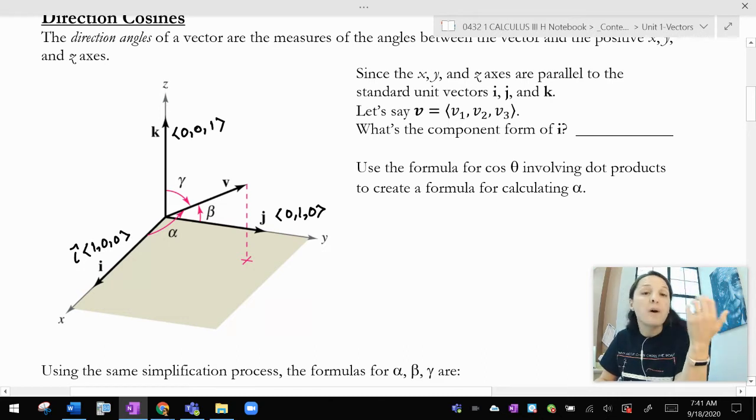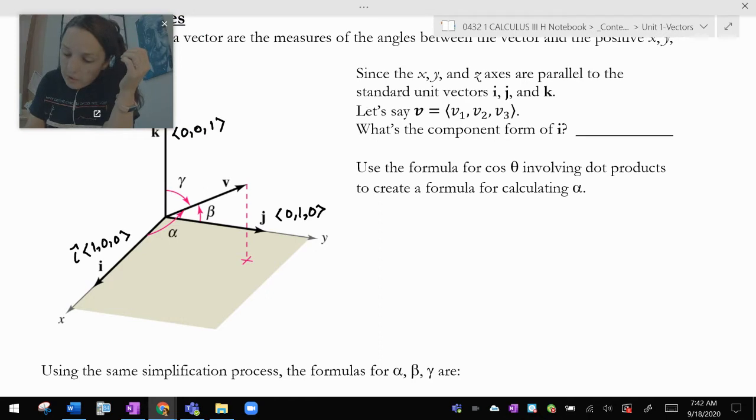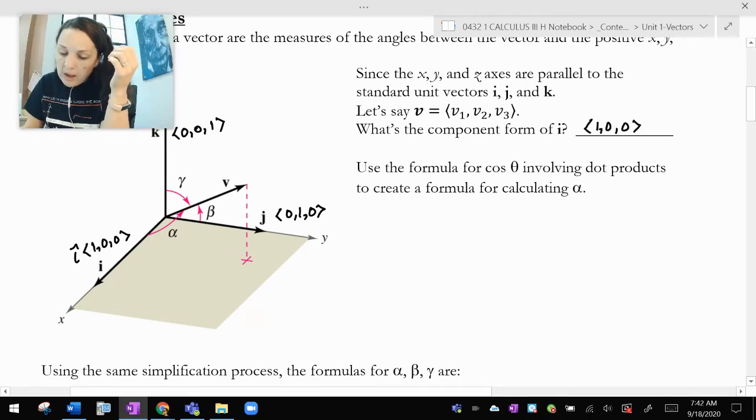The y-axis points in the same direction as j, which is (0, 1, 0). And the z-axis, the same direction as k, which is (0, 0, 1). So if I want the angle between a vector and an axis, I can do that cosine formula, that dot product cosine formula, with i, j, or k.